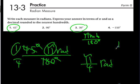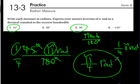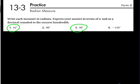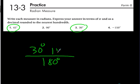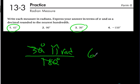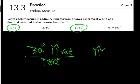You might also write that as one-fourth pi radians. Number 3: 30 degrees over 180 times pi radians. 30 over 180 — how many times does 30 go into 180? Six. So 6 is on the bottom, giving π/6 radians.